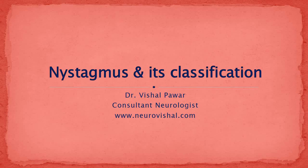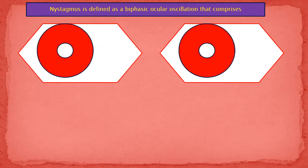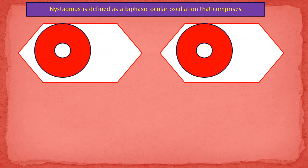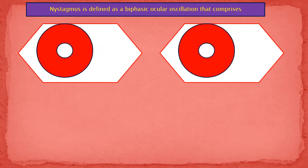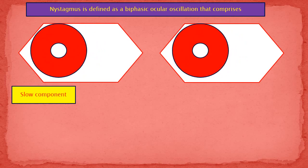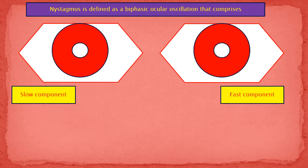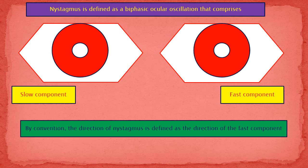In this video, I am going to discuss about nystagmus and its classification. Nystagmus is defined as biphasic ocular oscillation that comprises a slow component and a fast component. By convention, the direction of nystagmus is defined as the direction of the fast component.